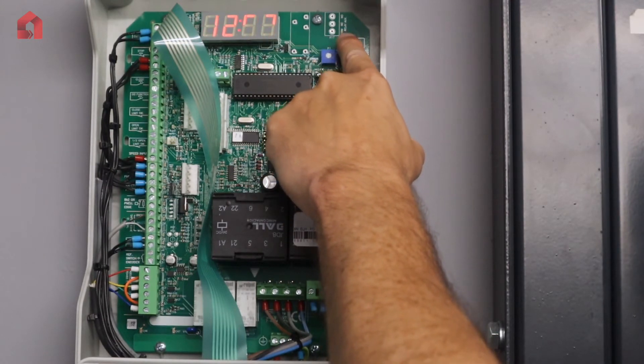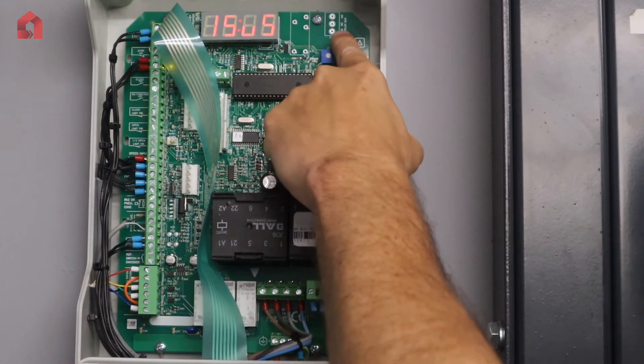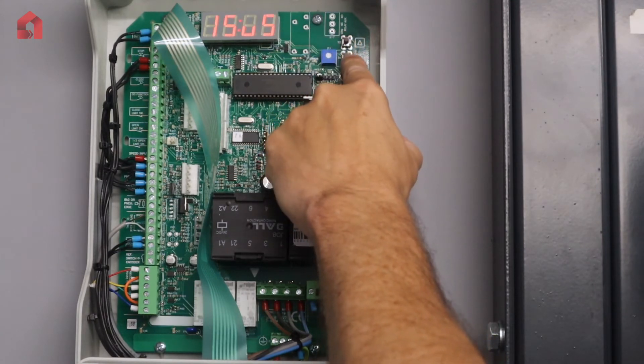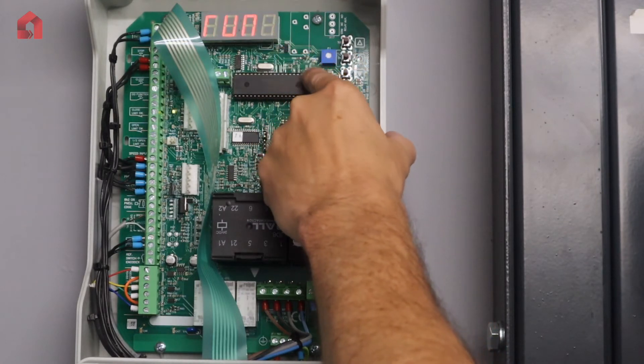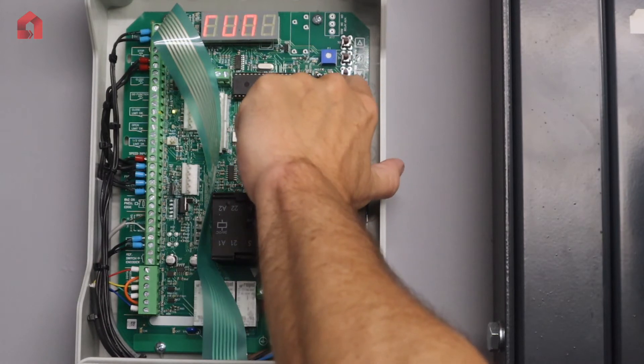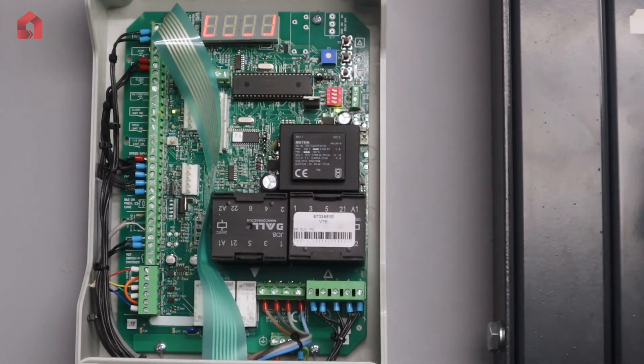So you can scroll through and do any changes up and down, and then the right hand side will allow it to change the parameter. Press the middle stop to store, and then dip switch one off will allow you to come out.